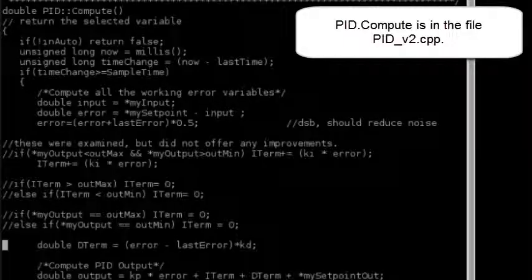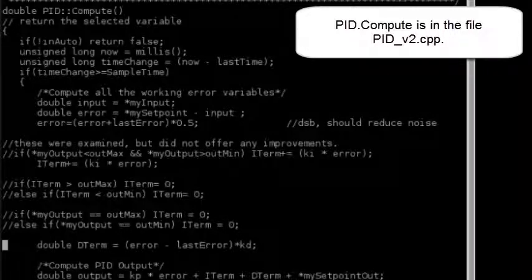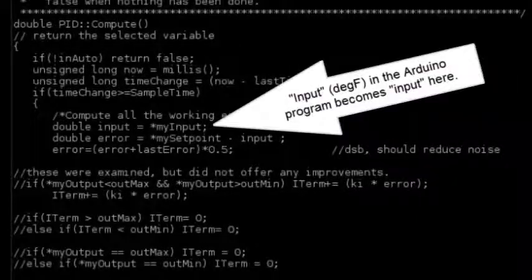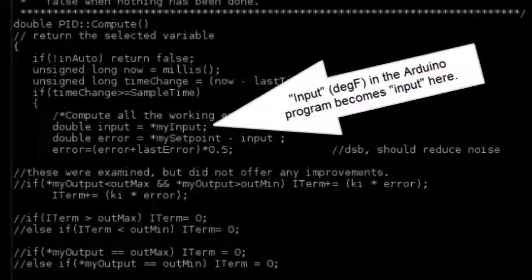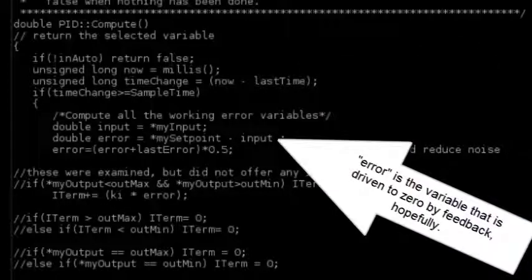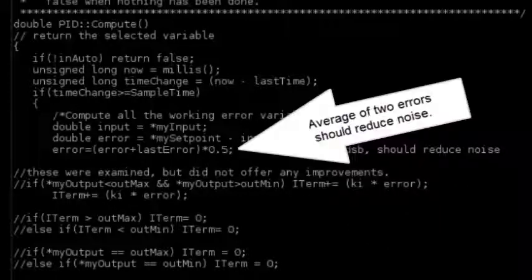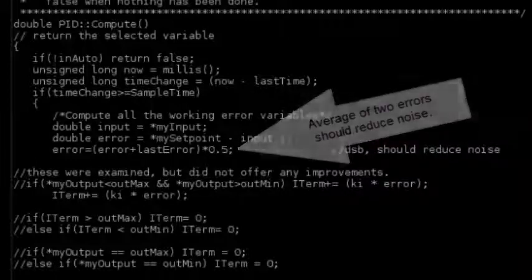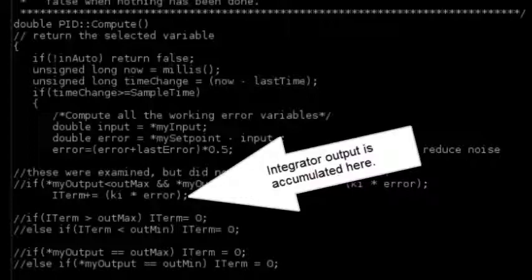PID.compute is in the file PID_V2.CPP. Capital input in the Arduino program becomes little input here. Error is the variable that is driven to zero by feedback, hopefully. Average of two errors should reduce the noise. Integrator output is accumulated here. The differentiator output is calculated here, but unused because Kd was set to zero.